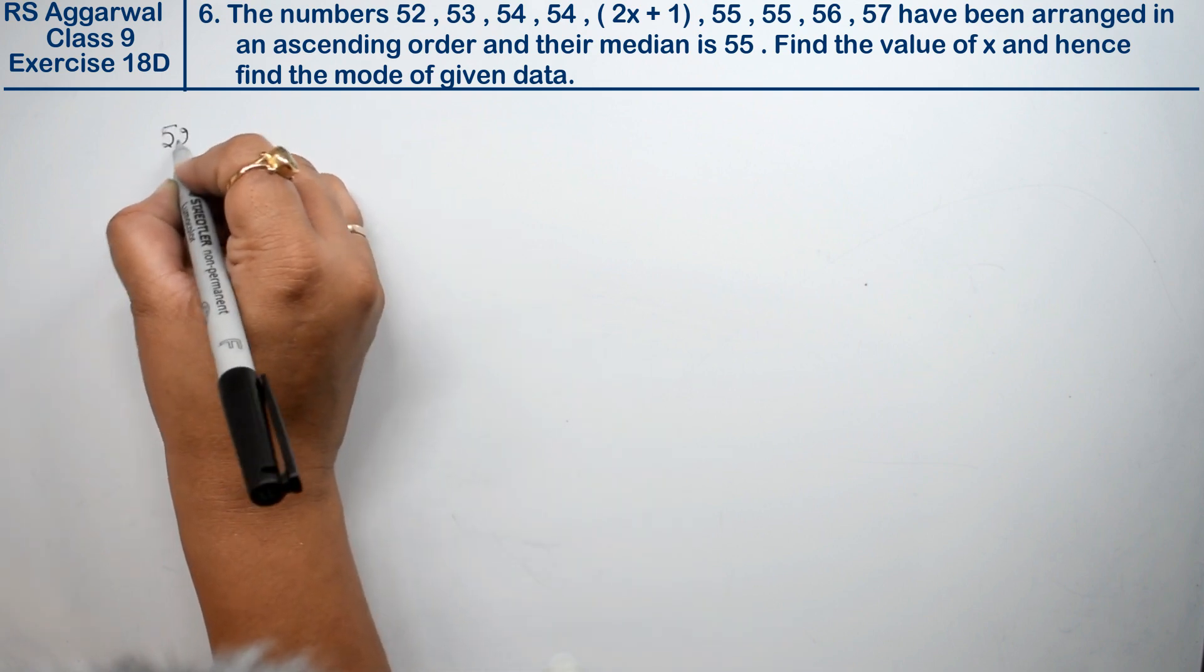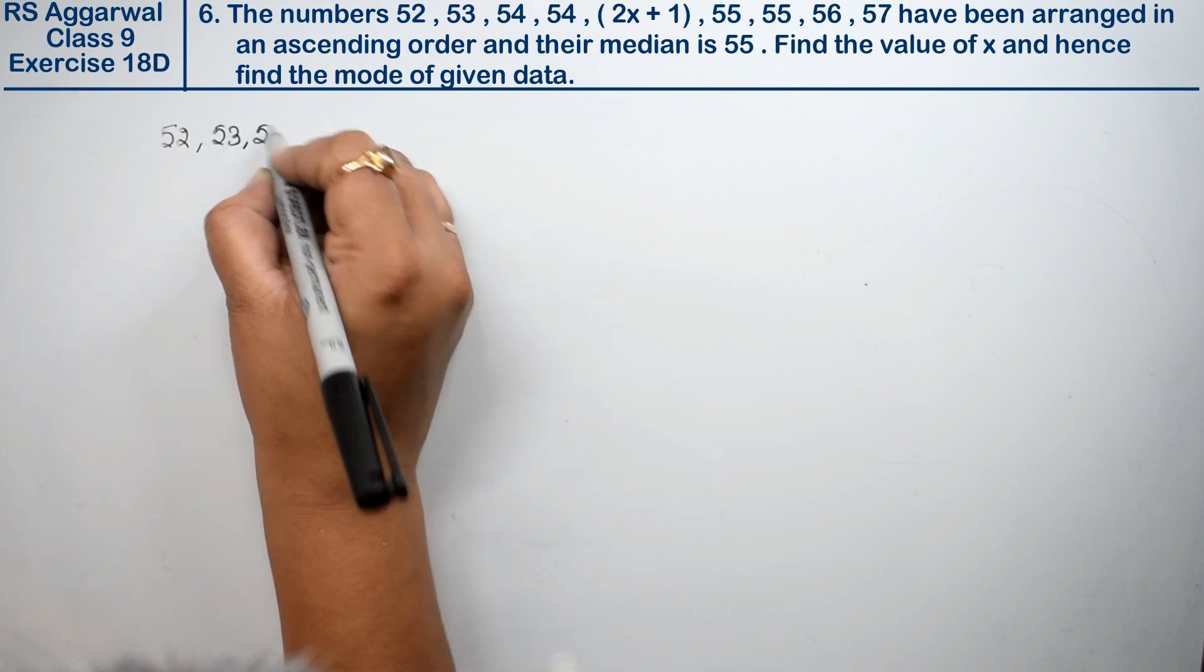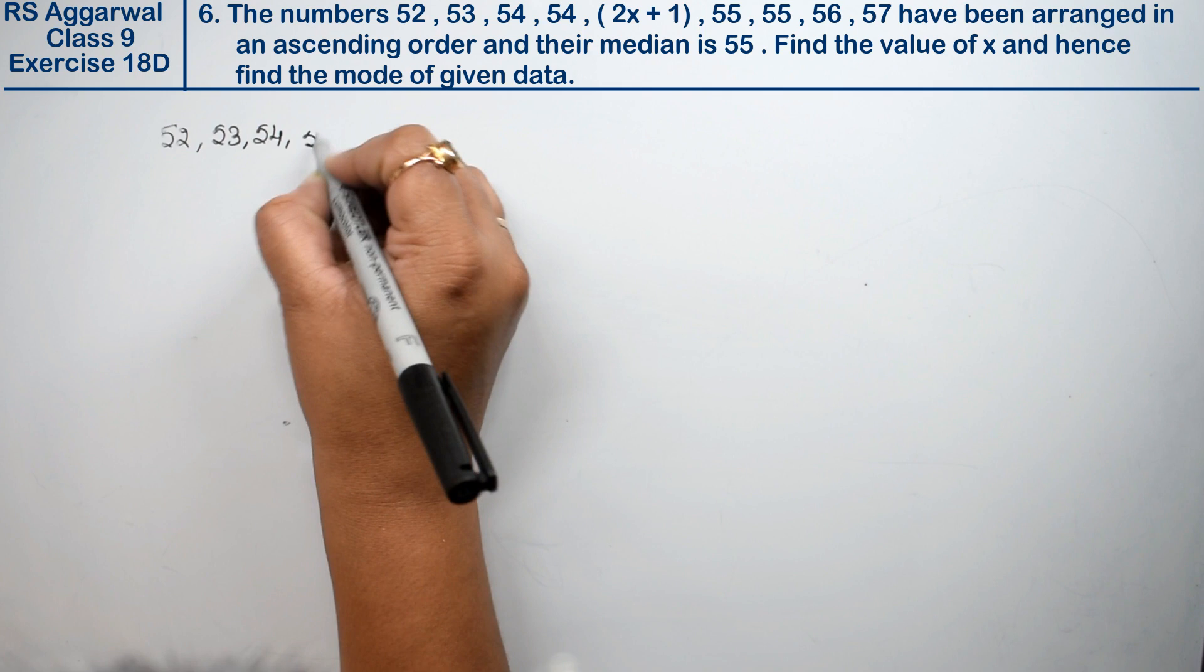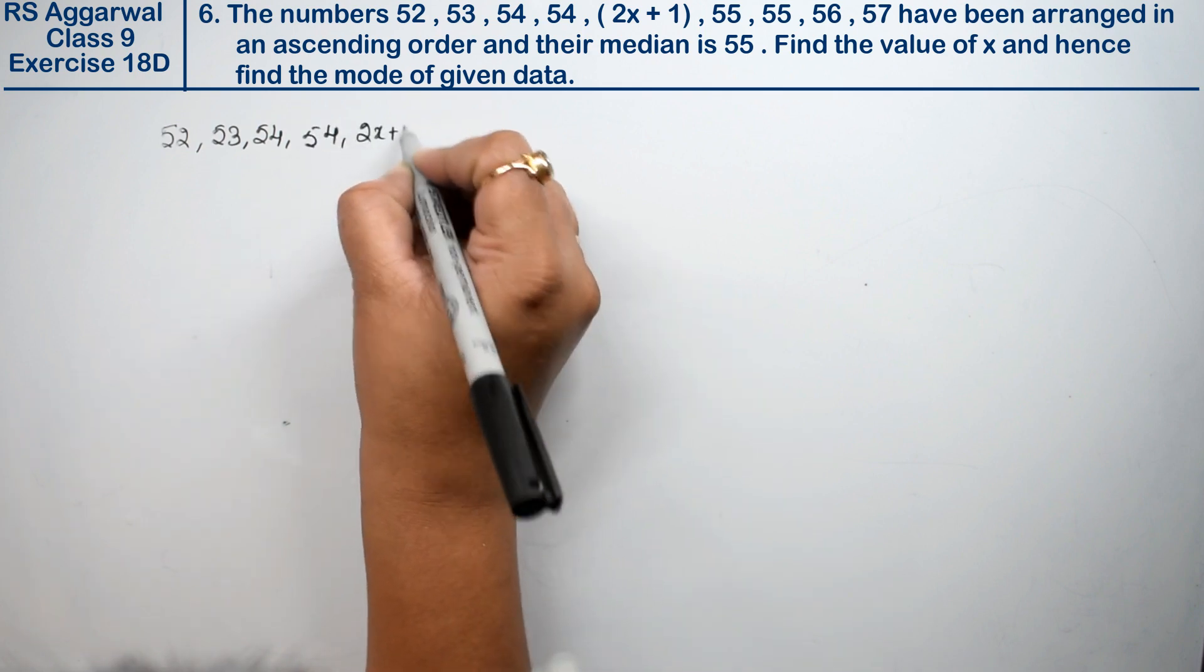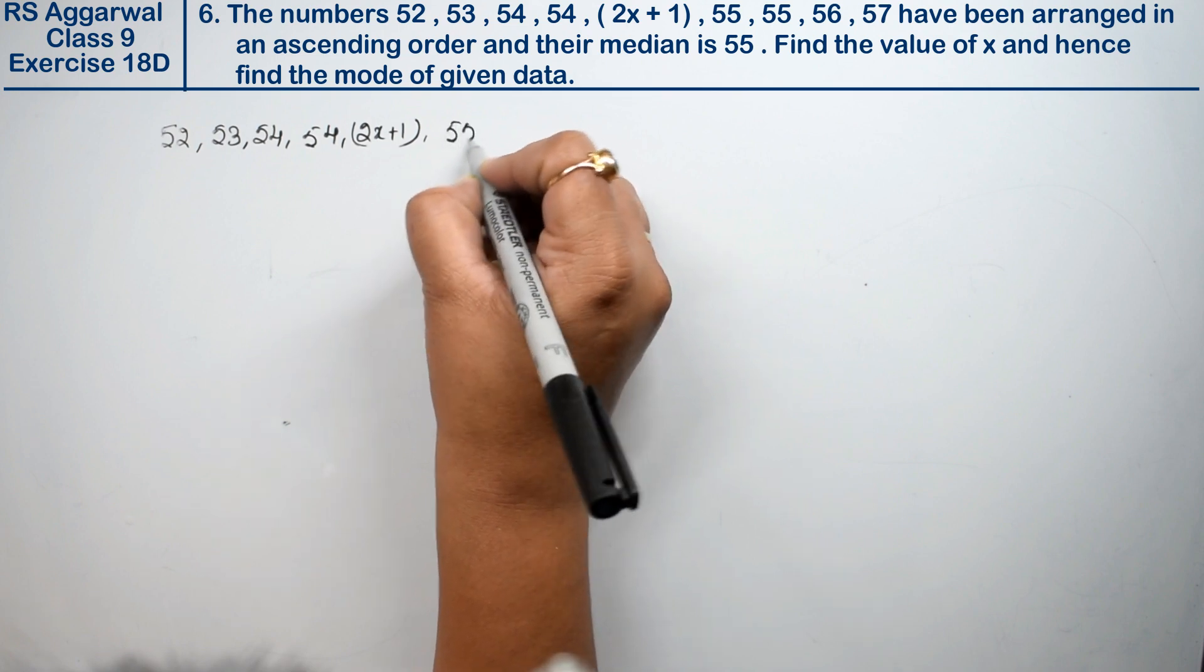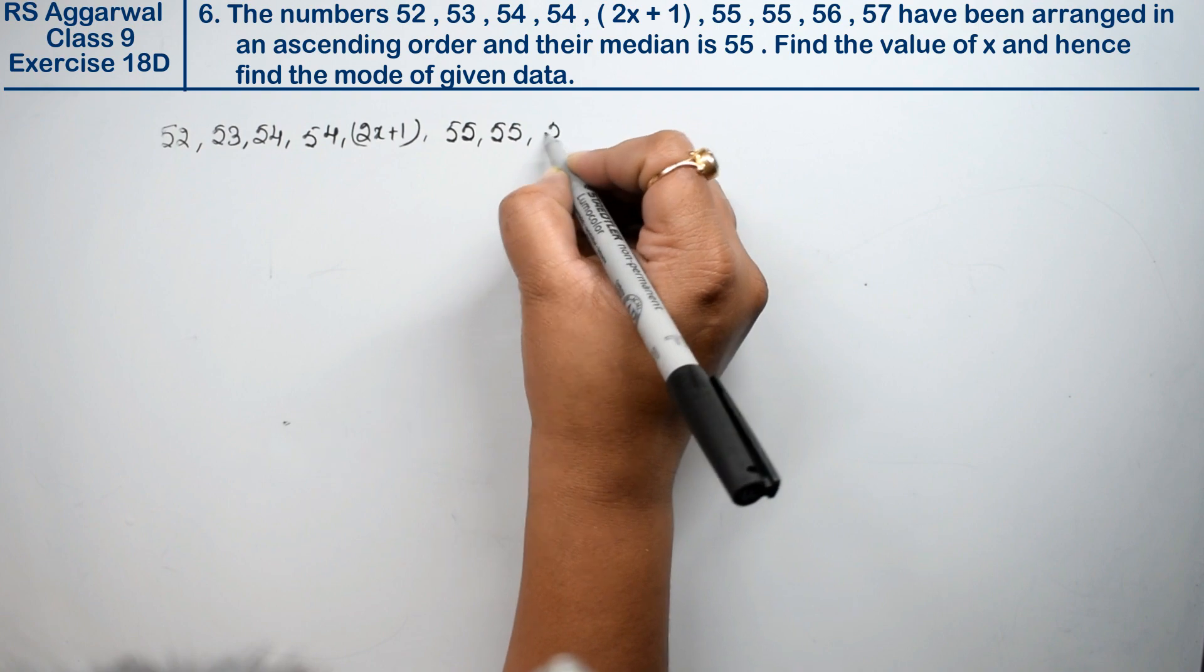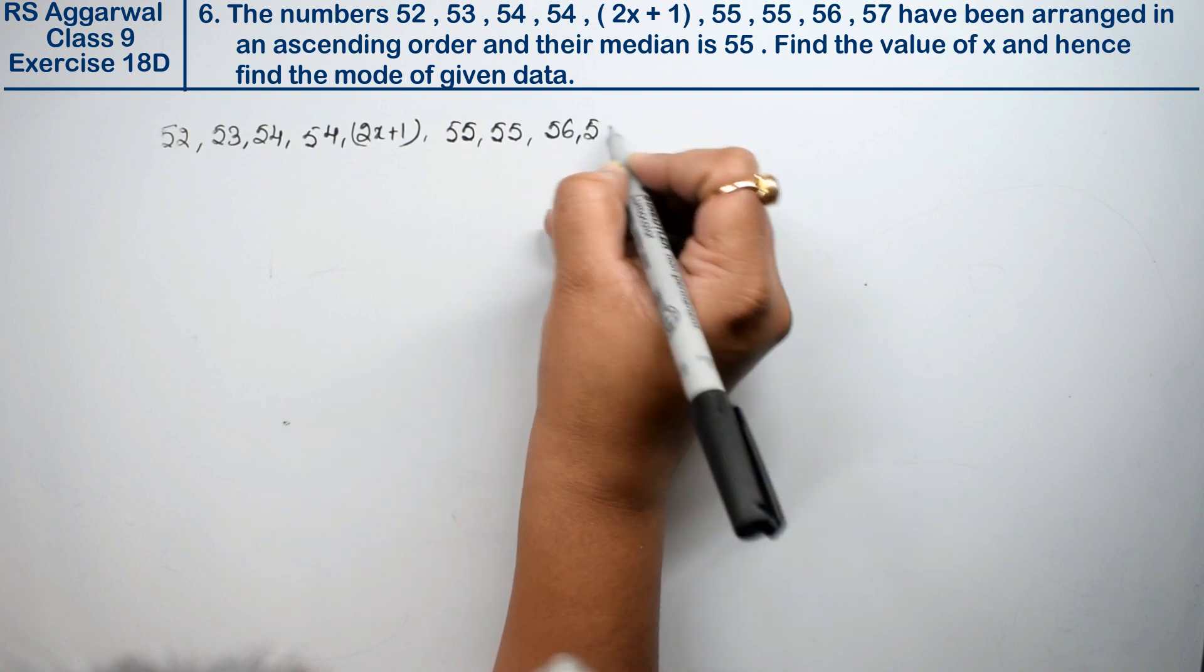First is 52, then 53, then 54, then again 54, then 2x plus 1, then 55, again 55, then 56 and 57.